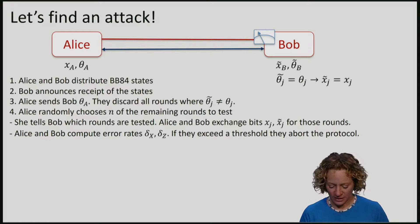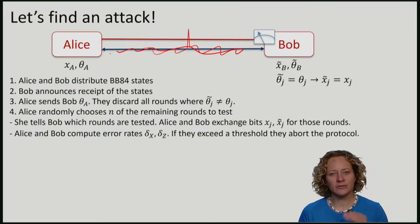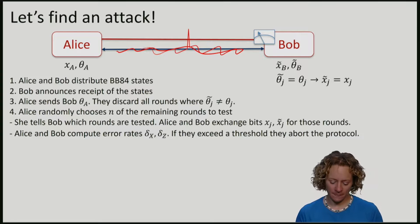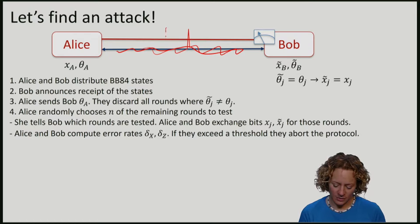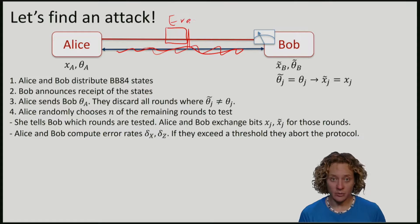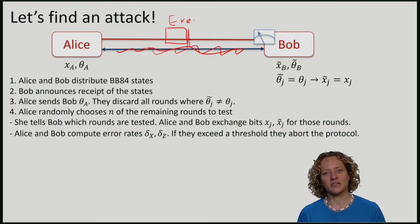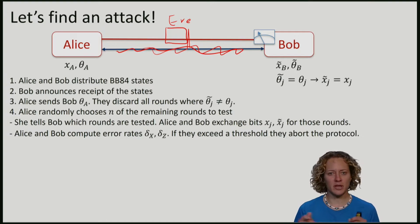If there is no authenticated channel and we are Eve, we can now perform what is called a man-in-the-middle attack. Eve is going to sit directly between Alice and Bob. And she is going to listen to all the communication on the quantum channel. Whenever she receives a qubit from Alice, she is just going to pretend to be Bob. She is going to measure it and do everything as Bob would do in the protocol.